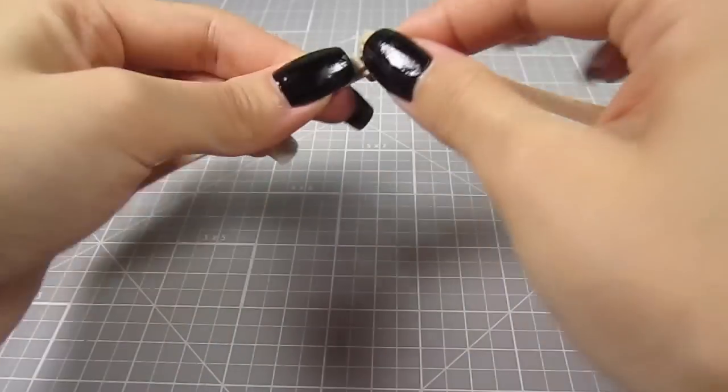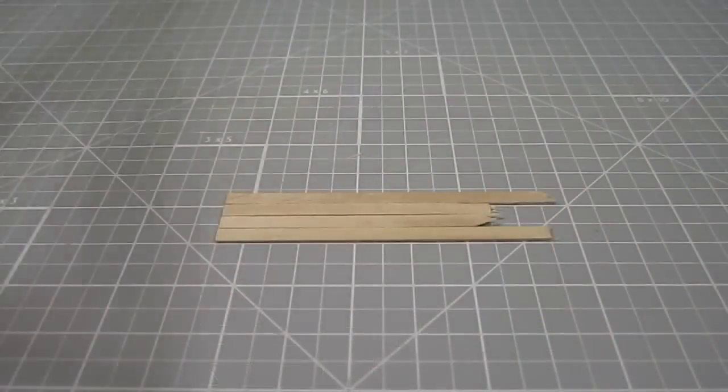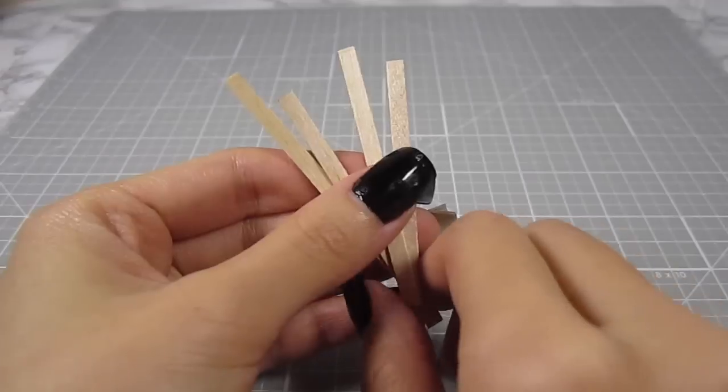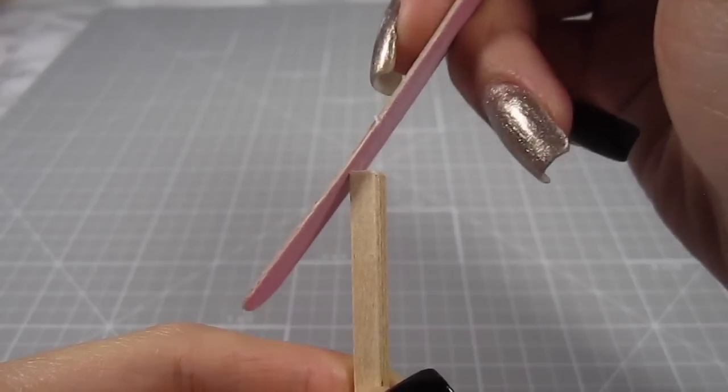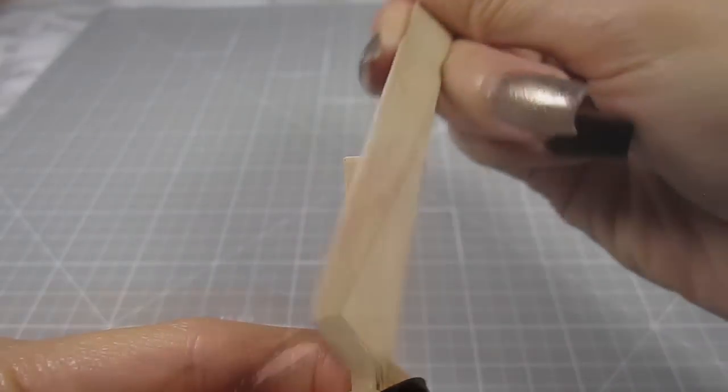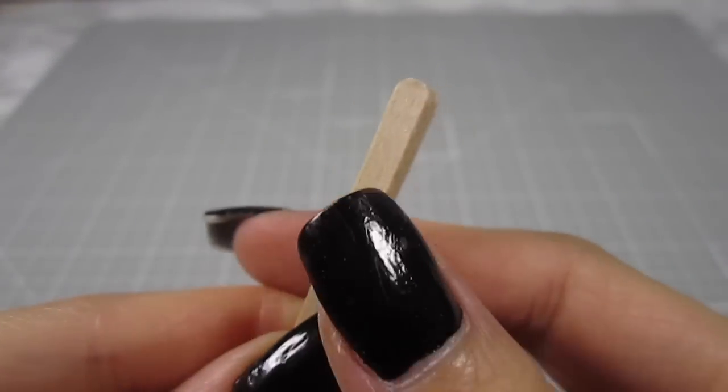We'll need 4 legs so I take 2 coffee stirrers and break them in half. Mark them at the 2.25 inch mark and cut off the excess wood. Round off one side for all the 4 legs. I'm just using a file to sand down the edges. Once that's done,